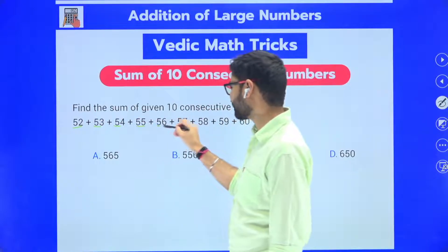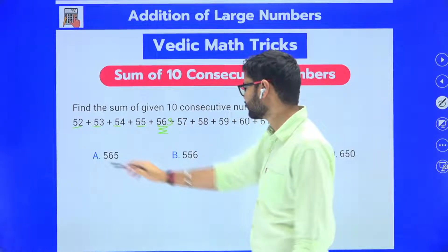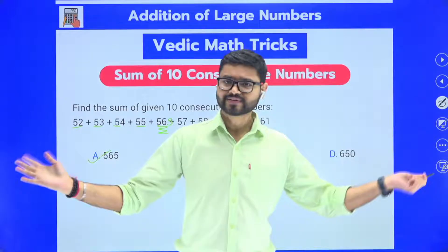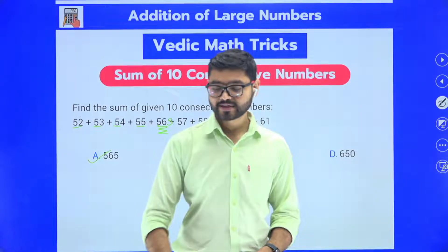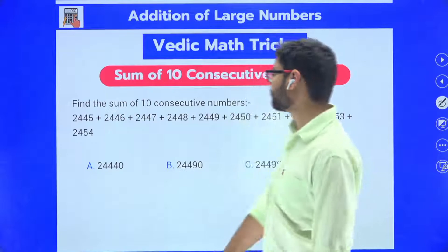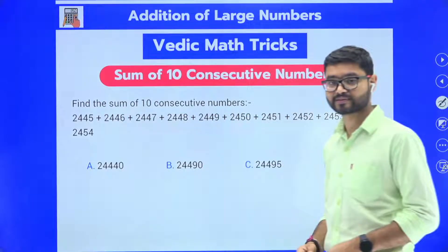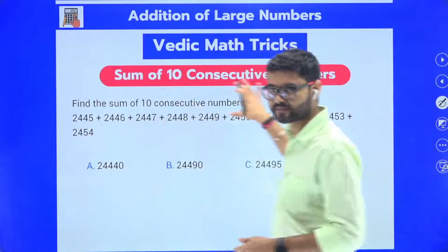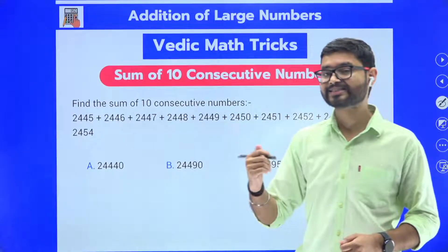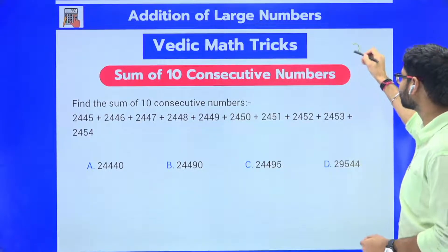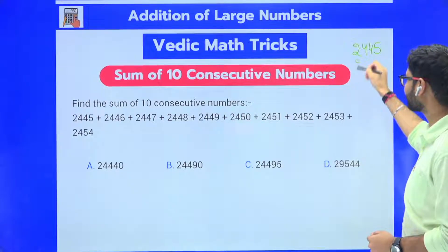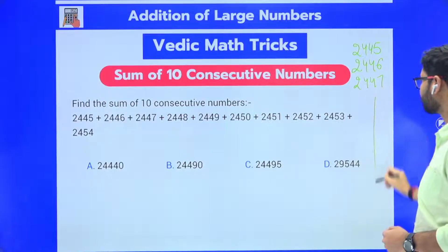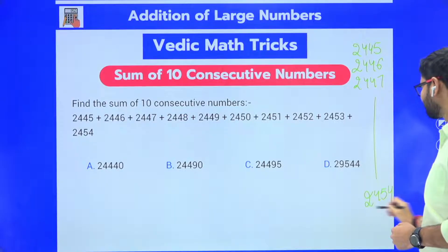Try this question also: one, two, three, four, five — this is the fifth number. Put 5 at the end: 565 is the answer. Now let me give you some big numbers — four-digit numbers! Before we apply the trick, just imagine: 2445, 2446, 2447 all the way up to 2454. If I try to solve this with the traditional method, how much time would that take?